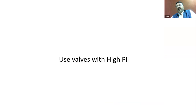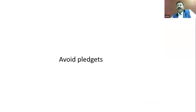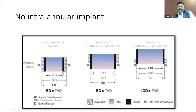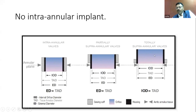Use valves with a higher performance index. Avoid pledgets — I always say pledgets are the enemy of the surgeon. Looking at the same annulus with three implantation techniques, the violet area representing blood flow is smallest with intra-annular placement (suture ring also inside), intermediate with supra-intra, and largest with supra-annular placement. Same annulus, but supra-annular positioning gives much more orifice area for blood flow.